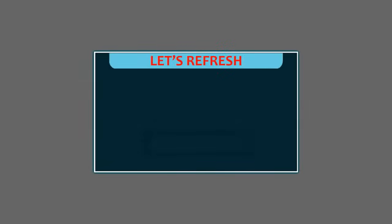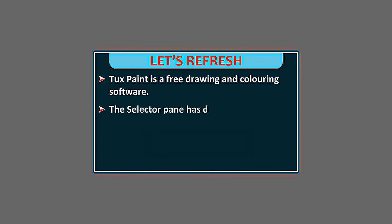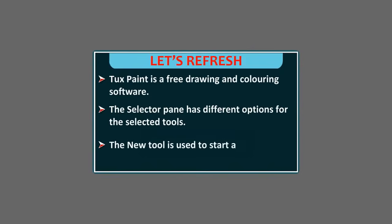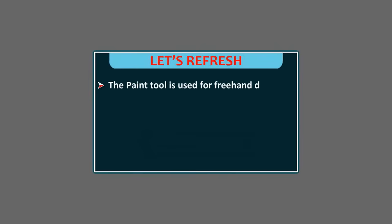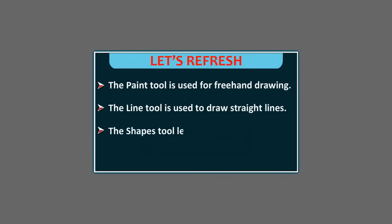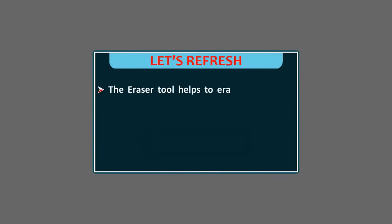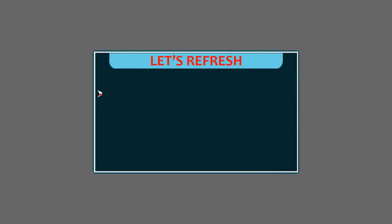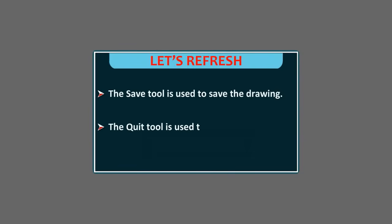Let's refresh. TuxPaint is a free drawing and coloring software. The Selector has different options for the selected tools. The New Tool is used to start a new drawing in TuxPaint. The Paint Tool is used for freehand drawing. The Line Tool is used to draw straight lines. The Shapes Tool lets you draw simple closed shapes. The Eraser Tool helps to erase any part of the drawing. The Fill Tool is used to fill colors in the drawing. The Save Tool is used to save the drawing. The Quit Tool is used to exit from TuxPaint.